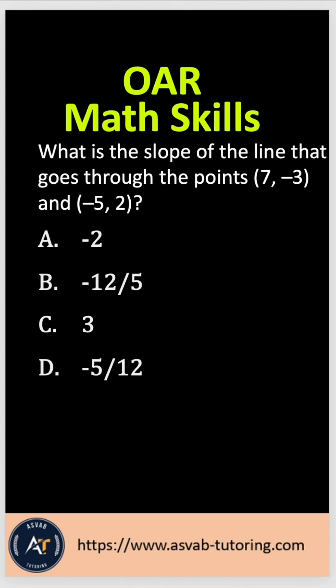Let's practice this very common math skill question for the Navy officer candidate test called OAR test. The question says here, what is the slope of the line that goes through the point (7, -3) and (-5, 2), right?